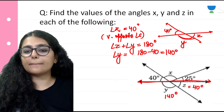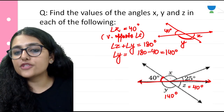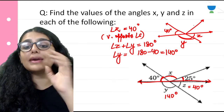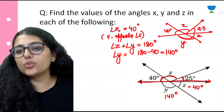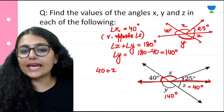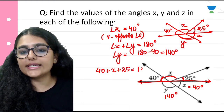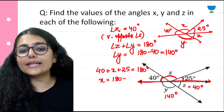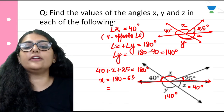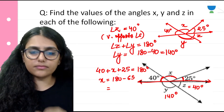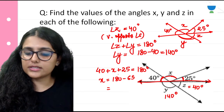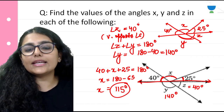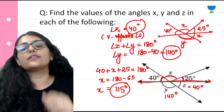So y equals 140 degrees. Now looking at the upper side: this is 40, this is x, and this is 25. These angles are also on the straight line, so 40 plus x plus 25 equals 180 degrees. That gives 65 plus x equals 180, so x equals 180 minus 65, which equals 115 degrees. Therefore: x equals 115 degrees, z equals 40 degrees, and y equals 140 degrees.